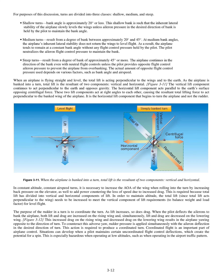The actual amount of opposite flight control pressure used depends on various factors such as bank angle and airspeed. When an airplane is flying straight and level, the total lift is acting perpendicular to the wings and to the earth. As the airplane is banked into a turn, total lift is the resultant of two components: vertical and horizontal. The vertical lift component continues to act perpendicular to the earth and opposes gravity. The horizontal lift component acts parallel to the earth's surface opposing centrifugal force. These two lift components act at right angles to each other, causing the resultant total lifting force to act perpendicular to the banked wing of the airplane.